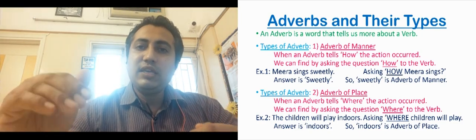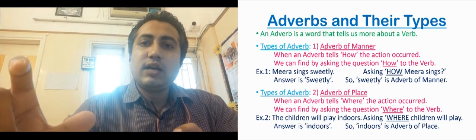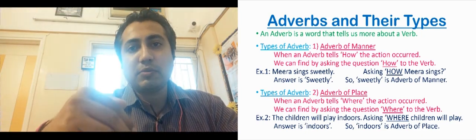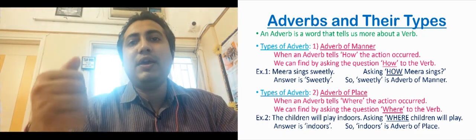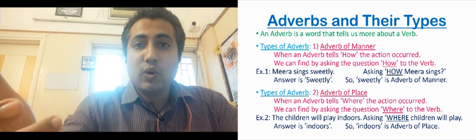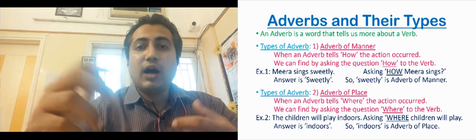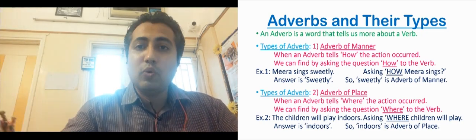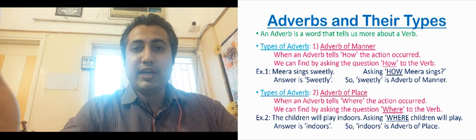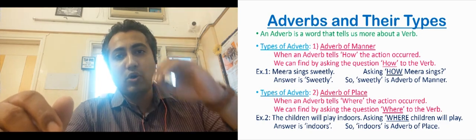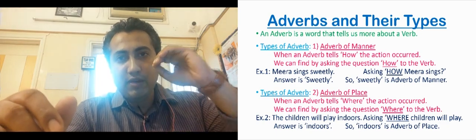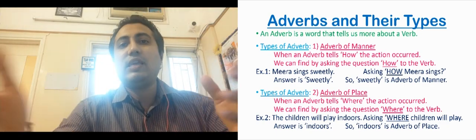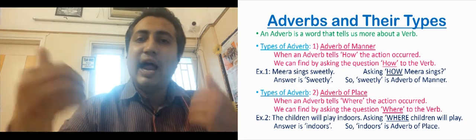So an adverb is a word that tells us about the action that is going on in the sentence — tells us about the verb. How was the verb done? Where was it done? When was it done? How often? All this information about a verb is given by an adverb.